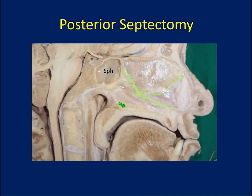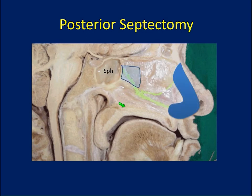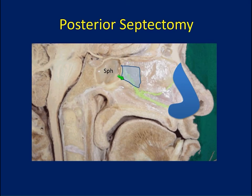To allow binarial access — using both nostrils — and to increase the freedom of motion of our instruments, we most frequently perform a posterior septectomy. This is essentially inconsequential because, as long as we maintain the anterior strut, this small posterior window has no functional consequence for the patient but allows tremendously increased freedom of motion and mobility. For every endoscopic endonasal skull base case, we perform a posterior septectomy.